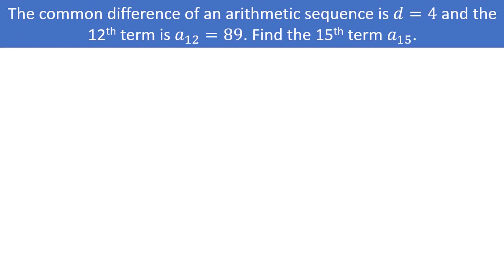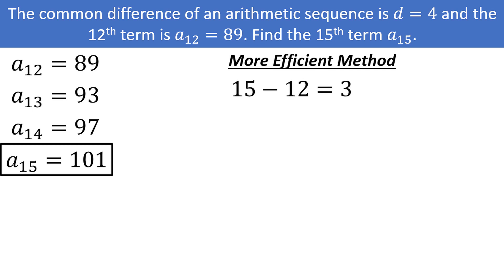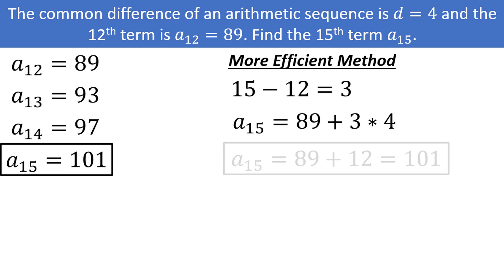Let's try this one. If the common difference in an arithmetic sequence is d equal to 4, and the 12th term is a sub 12 equal to 89, find the 15th term. A more efficient way is to look at how many terms away we are. The difference between 15 and 12 is 3, so all you need to do is add 4 three times. You would have 89 plus 3 times 4, which is 89 plus 12, or 101.